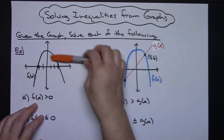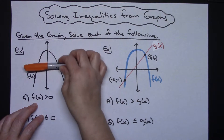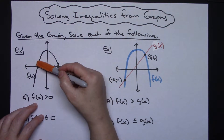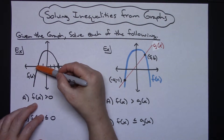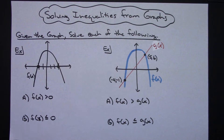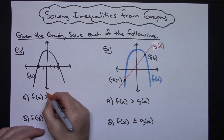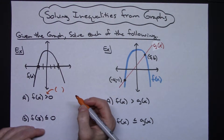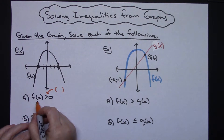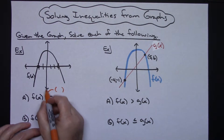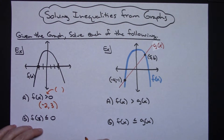Where is this quadratic greater than zero, or above zero — above the x-axis? It is above the x-axis in between the x values of negative 2 and 3. It does say greater than, not greater than or equal to, so that's your clue that you should be using curvy brackets in your interval notation. To solve f of x greater than zero, we would say open bracket negative 2 to 3 open bracket.